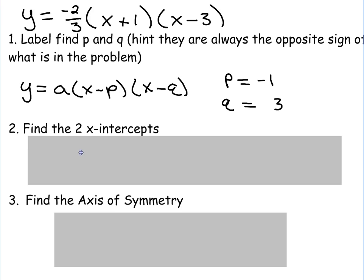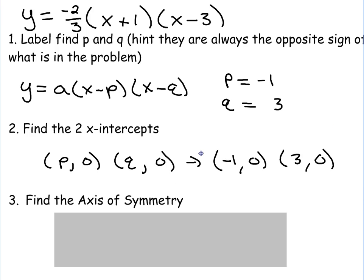Next piece we're going to find is the two X intercepts. The X intercepts are always in the format of P comma zero and Q comma zero. So since we have P and Q, my points are negative one zero and three zero.